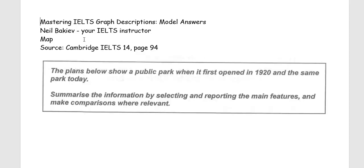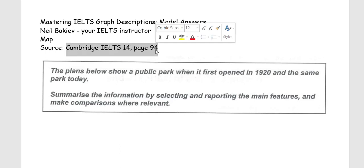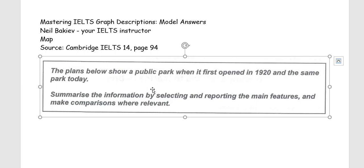Hello everybody. Today we will be analyzing a map taken from Cambridge IELTS 14, page 94. The plans below show a public park when it first opened in 1920 and the same park today. Summarize the information by selecting and reporting the main features and make comparisons where relevant.